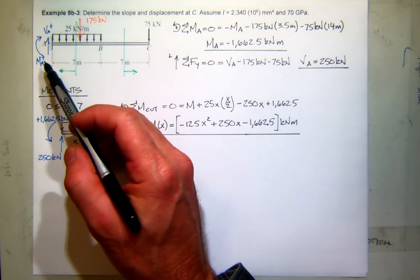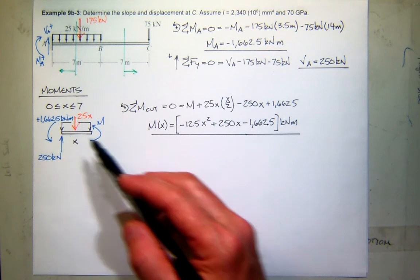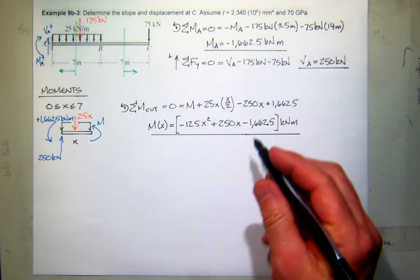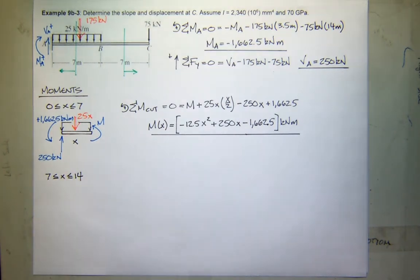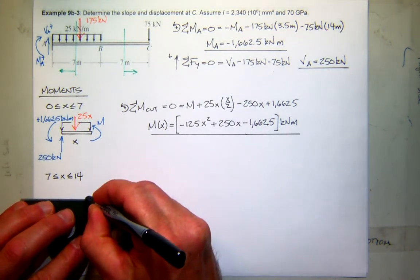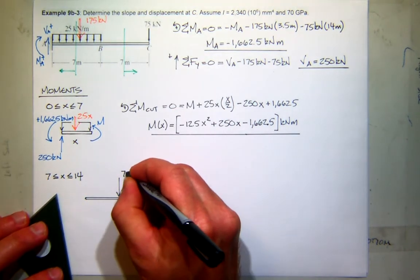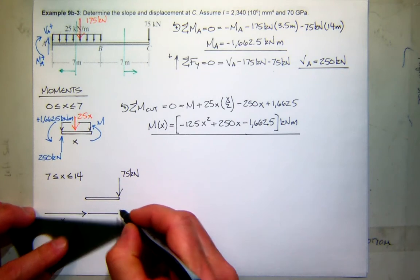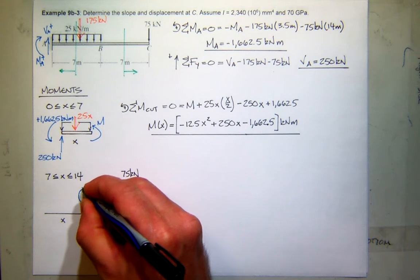And that has the value of kilonewton meters. So there's my moment expression for the first seven meters. The only thing we can check about it right now is that at x equals zero, I should get the reaction moment, which I found is 1,662.5 kilonewton meters. And when you put in x equals zero, this term cancels, this term cancels, you get that. We'll do the check in a minute when we get the second value, which is going to be good from 7 to 14. So now the free body diagram for that structure, as we talked earlier, is to the right. So here's the right side of that cut with my 75 kilonewton force.